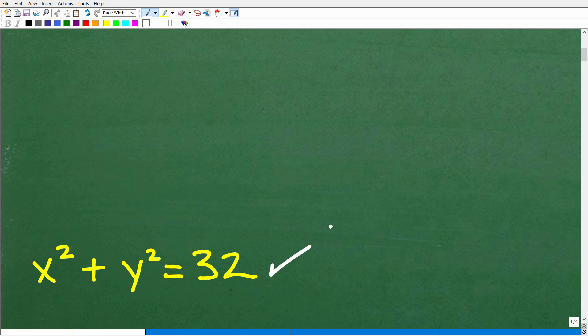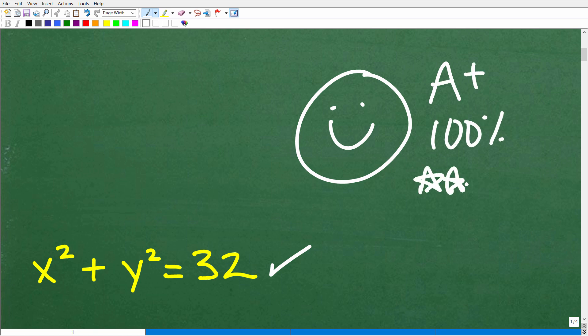Okay, so how'd you do? Well, hopefully you got this right. If that is the case, let's go ahead and give you a nice little happy face. An A+ a 100% and multiple stars so you can tell your friends and family that indeed you were able to reason through this particular algebra problem.